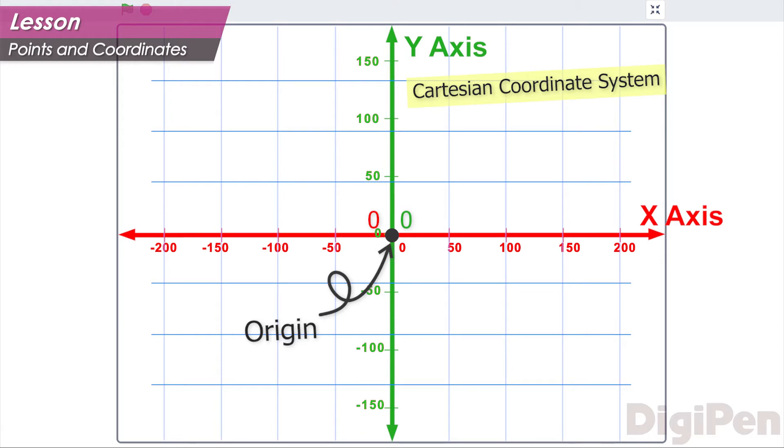A point is what we call an exact position on the coordinate grid. To make it easier to read, the position of the origin is written as zero, zero.